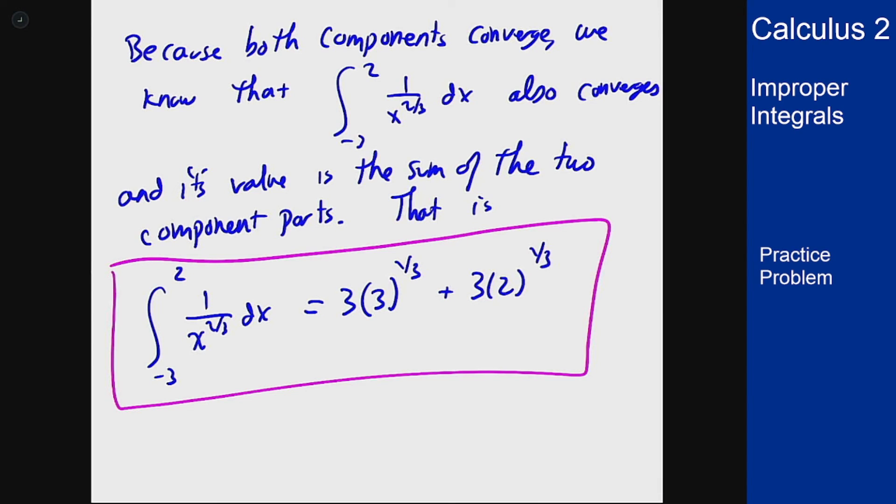Now note that you would have still gotten this answer if you'd ignored the entire concept of this being an improper integral and just done it directly. The issue here is you also get an answer like this if the integral diverges. And if you ignore the fact that it's improper you will never figure out that it diverges. So it's important to use this entire process of identifying this as an improper integral, splitting it up into its pieces, and working out each part separately to make sure you get the right answer.